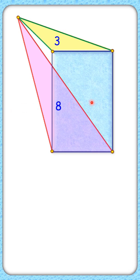Can you find the area of this blue rectangle? We are given the area of this yellow triangle and pink triangle is 3 and 8 centimeter square. Let's check the solution.